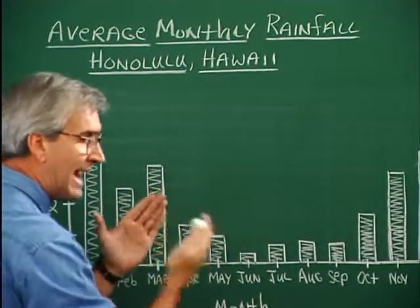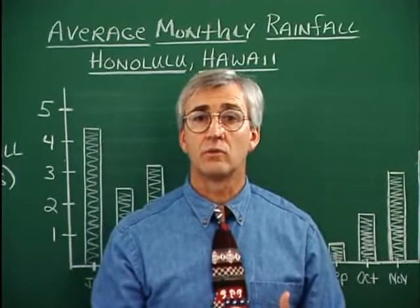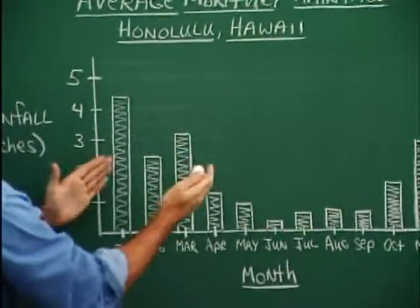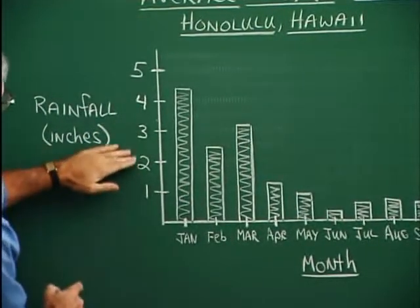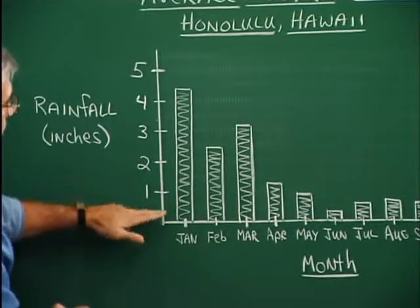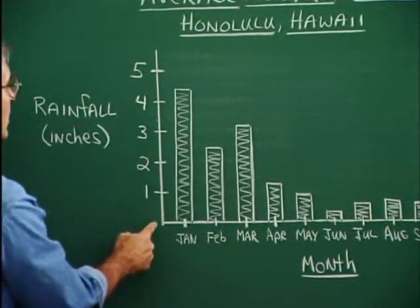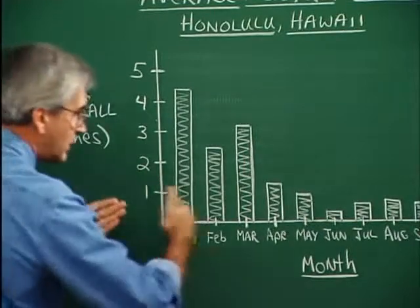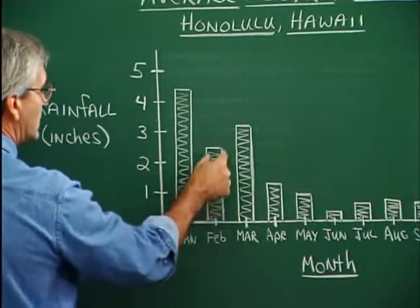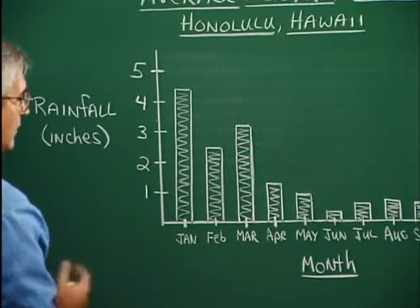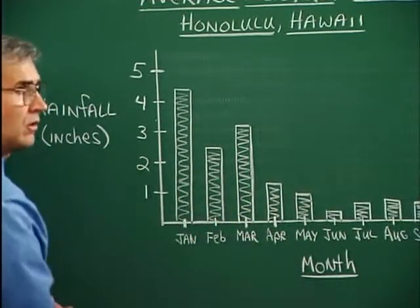I knew I needed two axes: one axis having to do with rainfall in inches, and another axis having to do with the months. On this axis I'm writing the rainfall in inches — notice the labeling, one through five, starting at zero. That's an important matter: we start with some basis, usually zero on the axis. On the time axis I have January, February, March, April, and so on. The lengths of the bars represent different amounts of rainfall from month to month, and notice the width of the bars is even all the way across, and the distance between bars is the same as well.